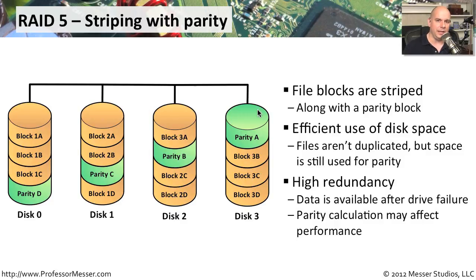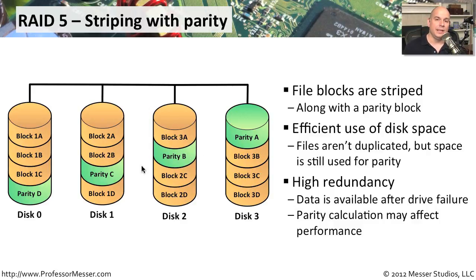RAID 5 is highly redundant — we have good performance from striping and redundancy from parity. If we lose disk three, for example, block 3B is gone, but we can use the parity B information to rebuild it on the fly. In a software-based configuration you may notice a performance hit from recalculation, but a hardware RAID controller is built for exactly this and most people won't even know a problem occurred.